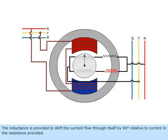The inductance is provided to shift the current flow through itself by 90 degrees relative to current in the resistance.